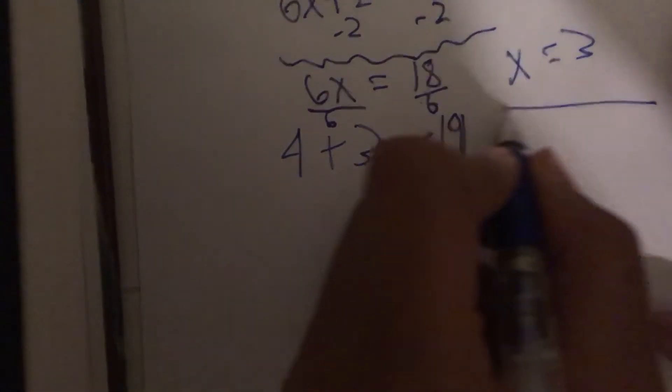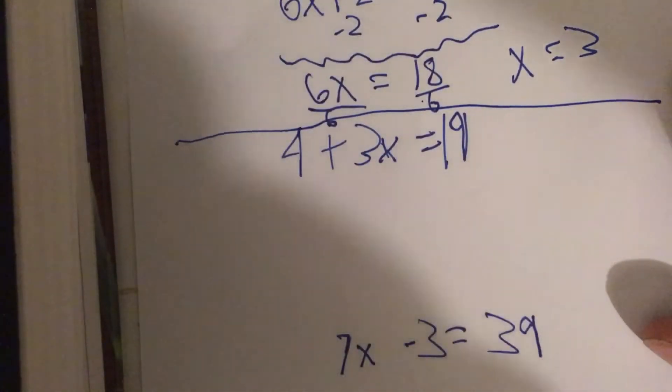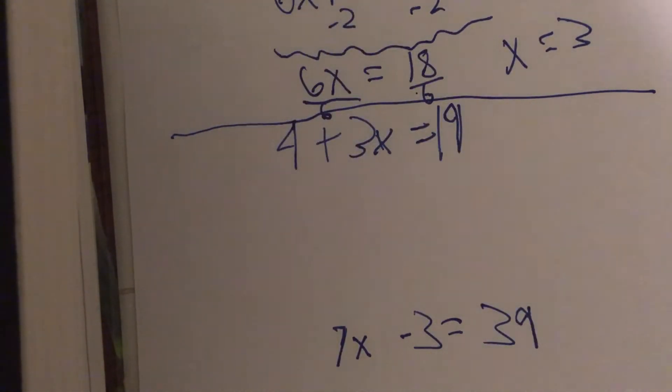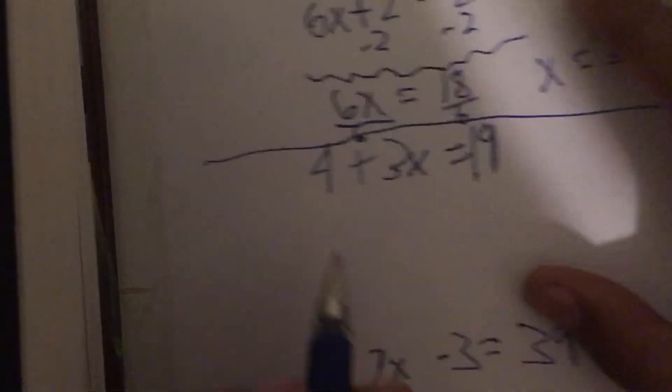For our next value, we have 4 plus 3x equals 19. Now, let's do the same thing we've done on all the other equations.